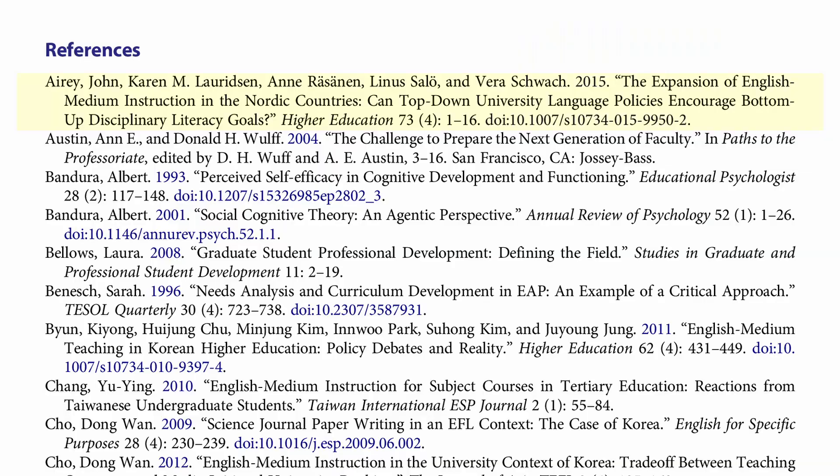So let's go to the works cited or references section — it might be called references, it might be called works cited. Let's look at the first one: Aerie, John. This is important. The references or works cited — more often called works cited in papers using Chicago style — will be in alphabetical order according to the family name or last name of the first author. So family name first, last name first, at least for the first author. The first one: Aerie comma John. John is a first name — don't cite John in the paper. Please cite their family name or last name. It's Aerie, not John.